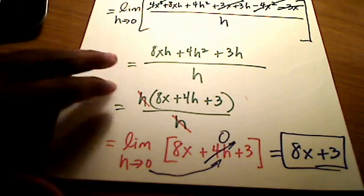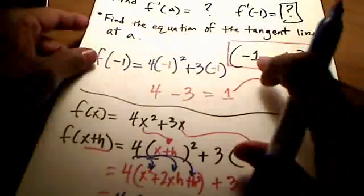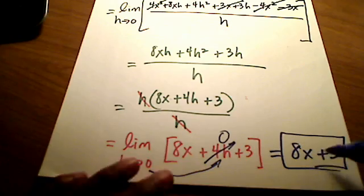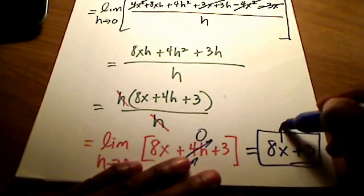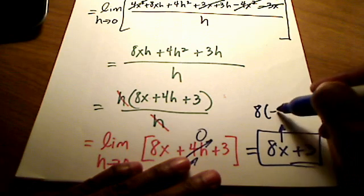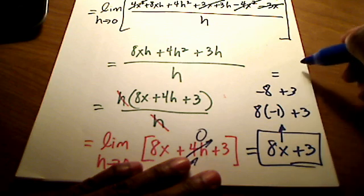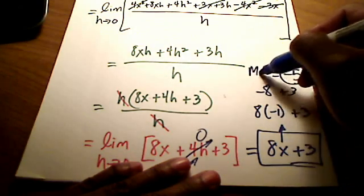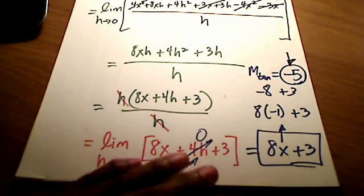Well, alright. What I was given, remember at the very beginning, I was given an x value of negative 1. There it is, x value of negative 1. So, I need to put that in place of x here, which I hope you see just leaves me with, if this is a negative 1, I've got 8 times negative 1 plus 3, or negative 8 plus 3. I have a final slope of negative 5. That's going to be the slope of the tangent line, negative 5 right there.